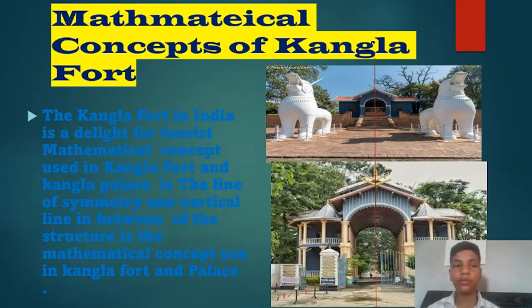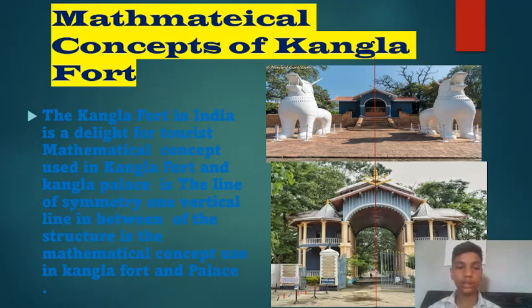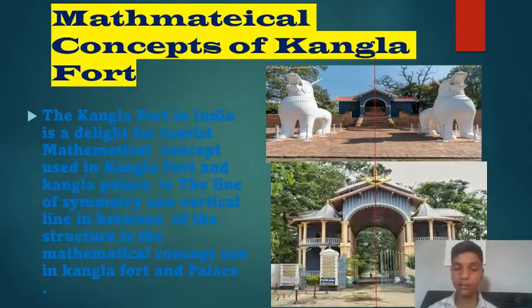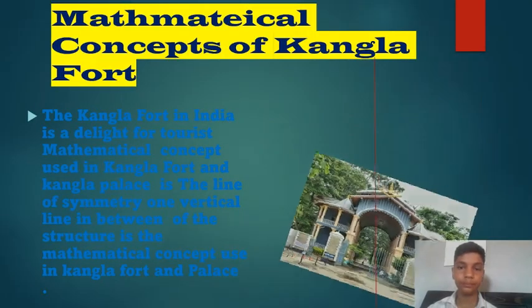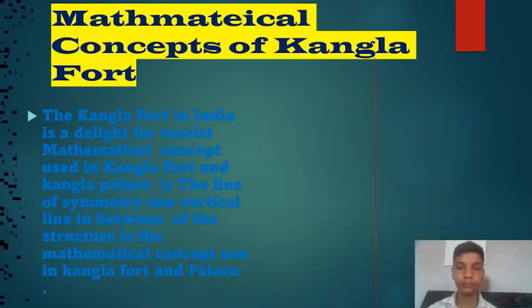The Kangla Fort in India is a delight for tourists. The mathematical concept used in Kangla Fort and Kangla Palace is a line of symmetry — one vertical line in between both structures is the mathematical concept applied here.